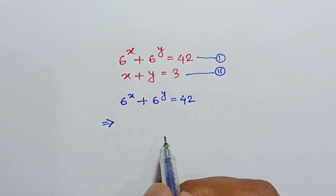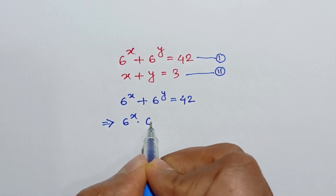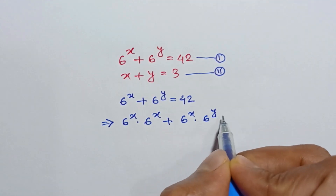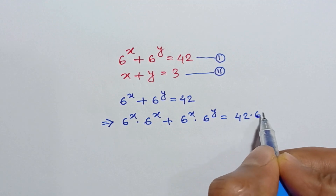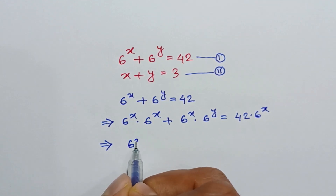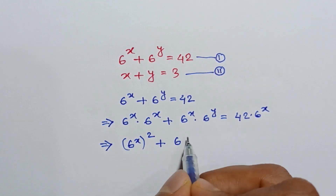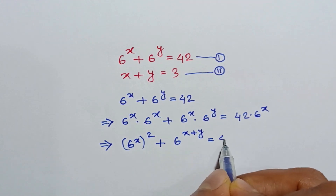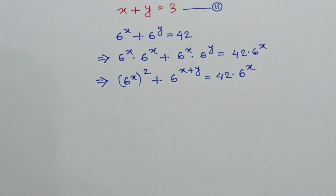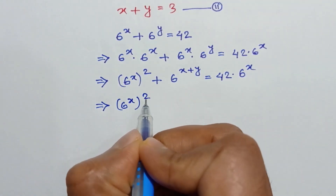Multiplying both sides by 6 to the power x, we can write 6 to the power x times 6 to the power x plus 6 to the power x times 6 to the power y is equal to 42 times 6 to the power x. This can be written as 6 to the power x whole square plus 6 to the power x plus y is equal to 42 times 6 to the power x.